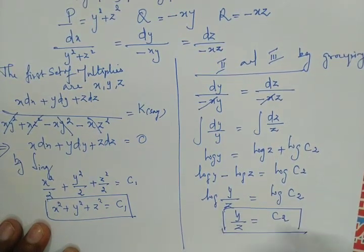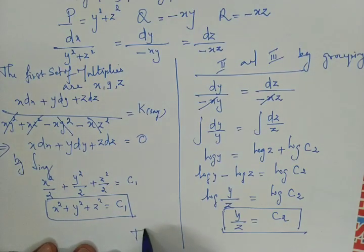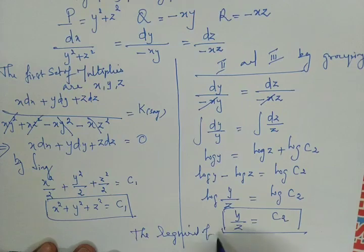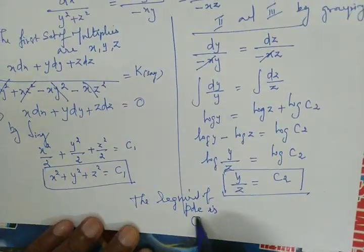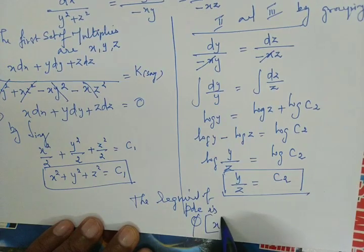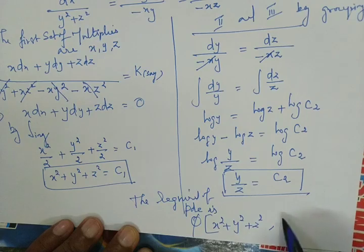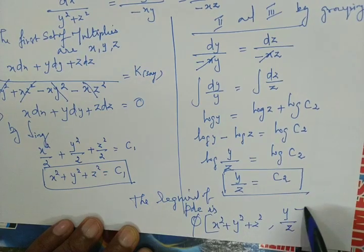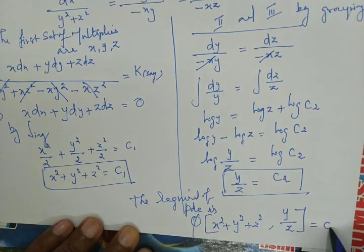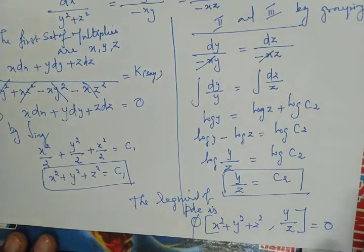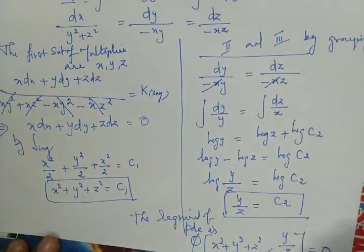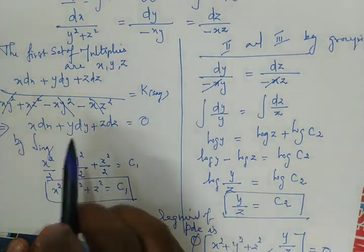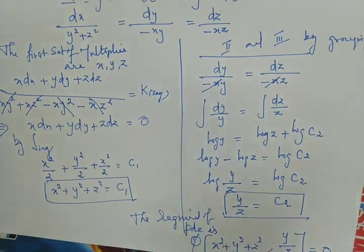Combining both results, the final required PDE solution is φ(x² + y² + z², y/z) = 0. Thank you friends, we will meet soon in the next class.